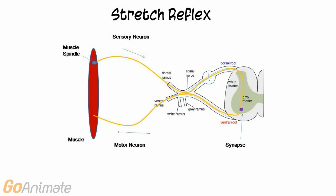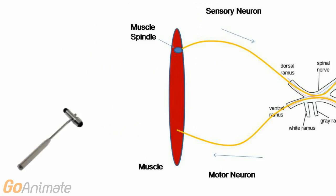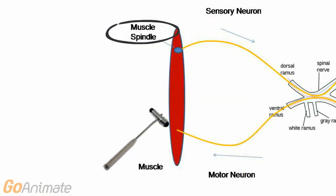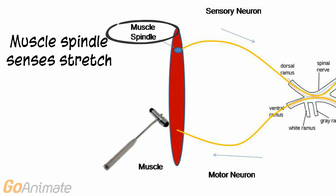The muscle's tendon is struck by a reflex hammer, causing the muscle to stretch. This stretch stimulus is sensed by a sensory receptor in the muscle called the muscle spindle.